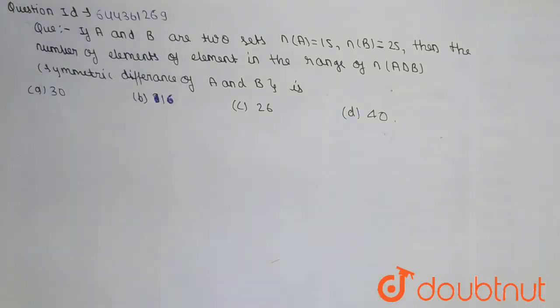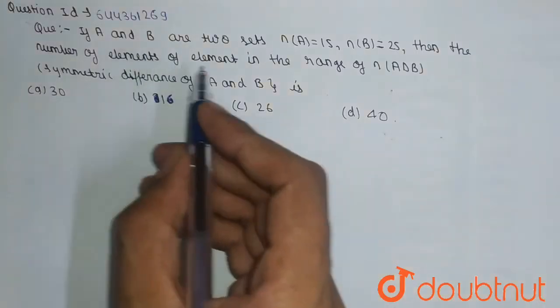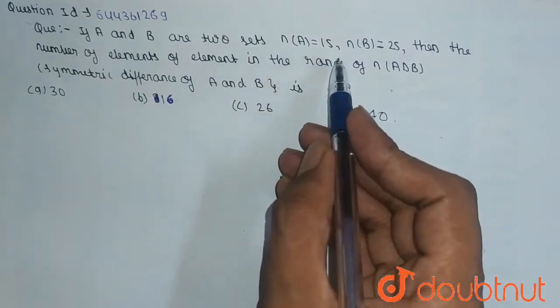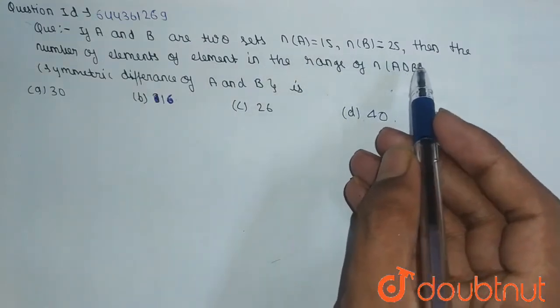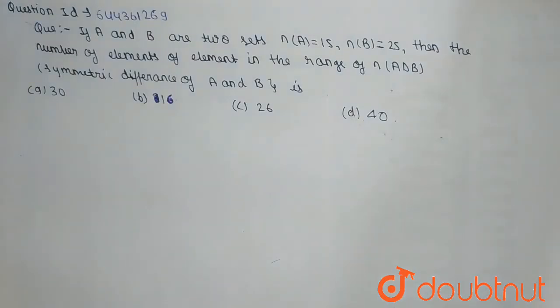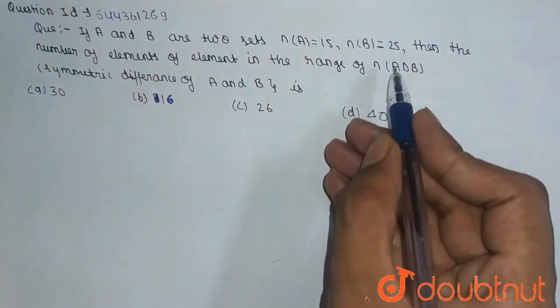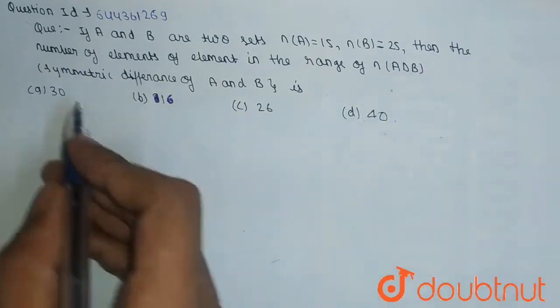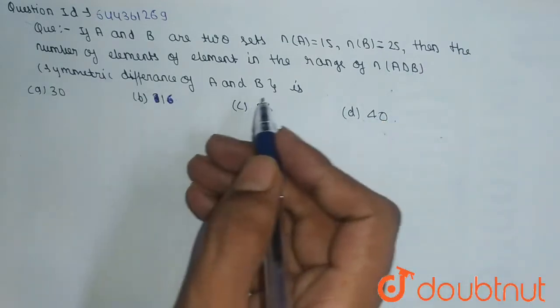Hello friends, our next question is on sets. The question is: if A and B are two sets and n(A) is equal to 15 and n(B) is equal to 25, then we have to find the number of elements of the range of n(A Δ B), where symmetric difference of A and B is given.